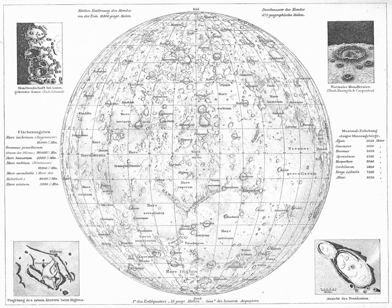Satellites of Uranus are named for characters from the works of William Shakespeare. Features on Puck are named after mischievous spirits.